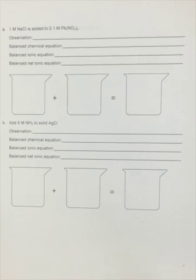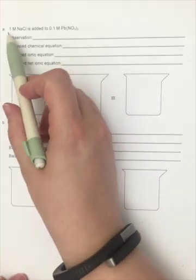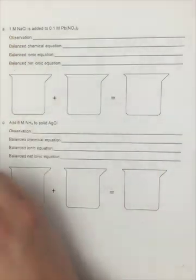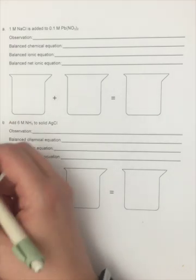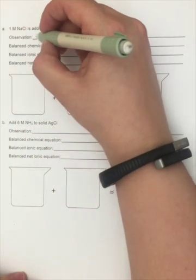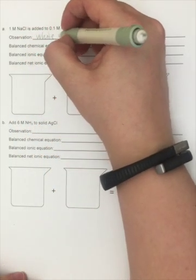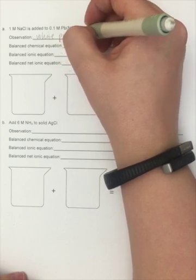To begin, we have NaCl reacting with Pb(NO3)2. Both are 0.1 molar, so these are both aqueous. If this were your experiment, you would have read the background information and known that chloride will precipitate with lead, and we're going to get a white precipitate.